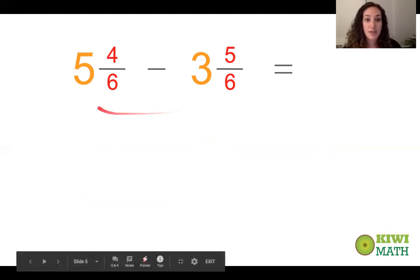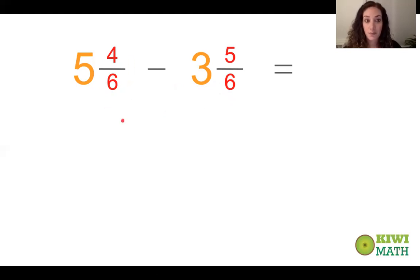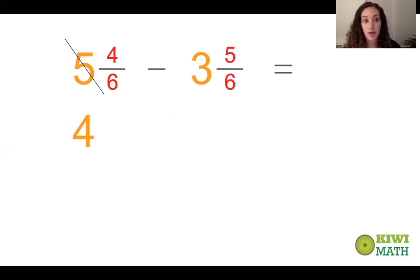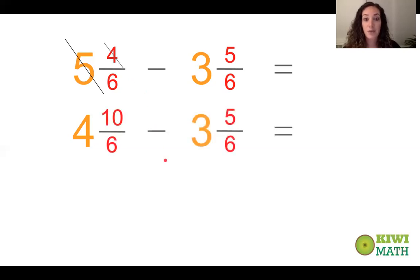Five and four sixths minus three and five sixths. Four sixths minus five sixths — we can't do that, we need more sixths. So we're going to take a whole, cross out that five, and since we took one whole away it becomes four. There are six sixths in that whole, so we add the six sixths to the four sixths we already have — now we have ten sixths. Ten sixths minus five sixths is five sixths, and four minus three is one. Our answer is one and five sixths.